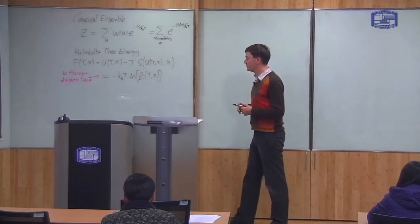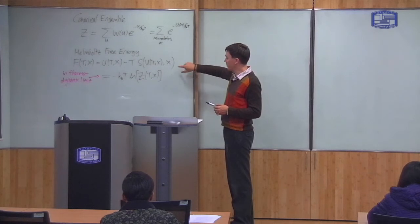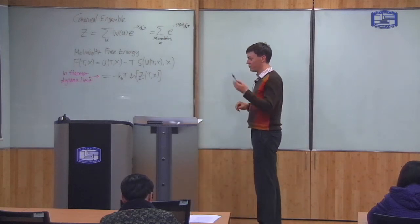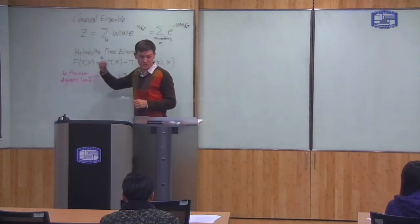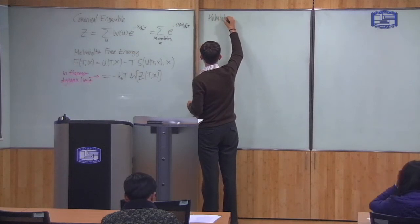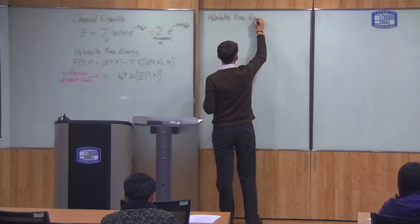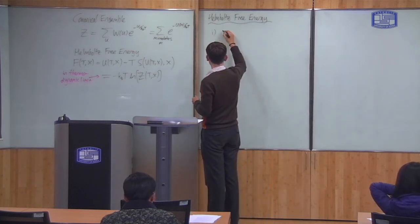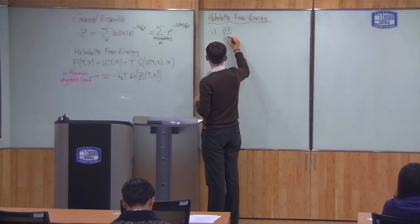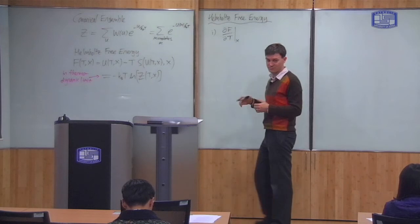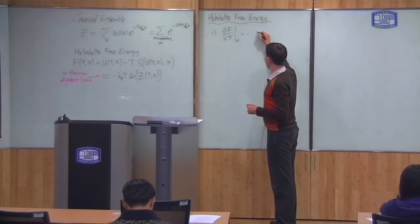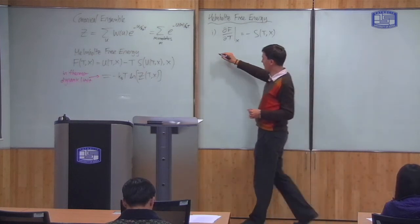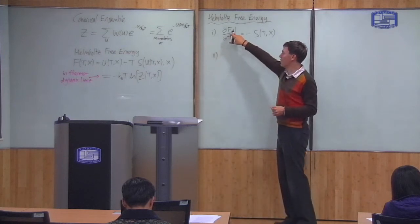I want to continue looking at the Helmholtz free energy, and in particular show how you can use it to derive things like the entropy and other properties of the system. There are two equations which are very useful. The first says that if I differentiate F with respect to temperature T holding other variables X constant, this is equal to minus the entropy S as a function of T and X. So if you know F, you can find the entropy.